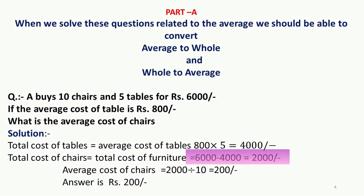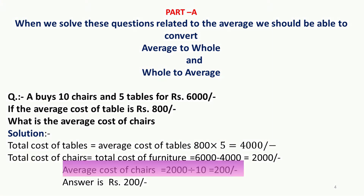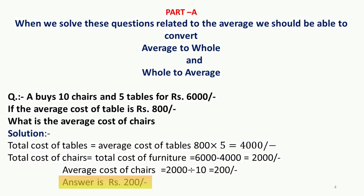The total cost of chairs is 6000 minus 4000, which equals Rs. 2000. The average cost of a chair is 2000 divided by 10, because there are 10 chairs, so the answer is Rs. 200. The average cost of each chair is Rs. 200.